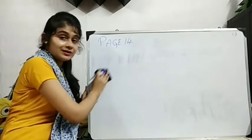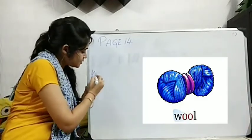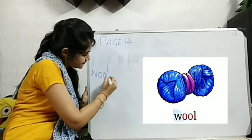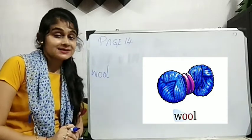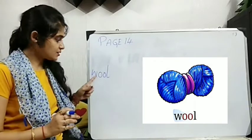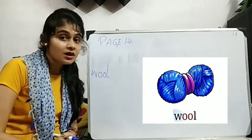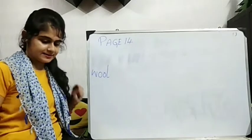Then next. Again we will do double O. What is this? Wool. Mama uses this to knit what? Sweater. Scarf. Right? So it's called Wool. Wool. Okay?